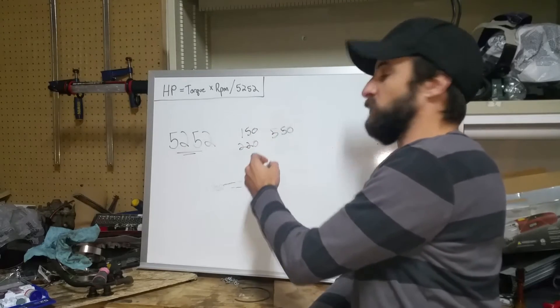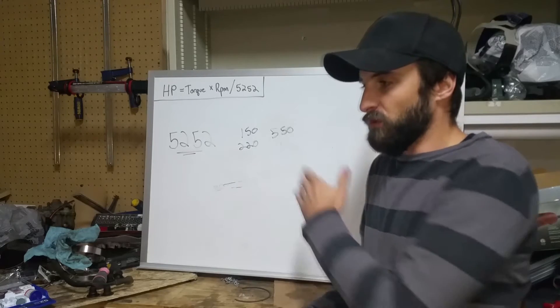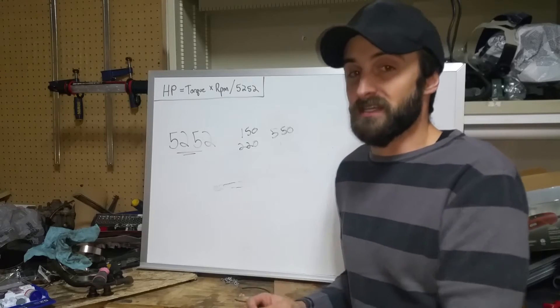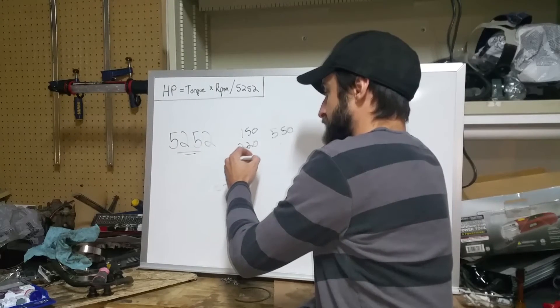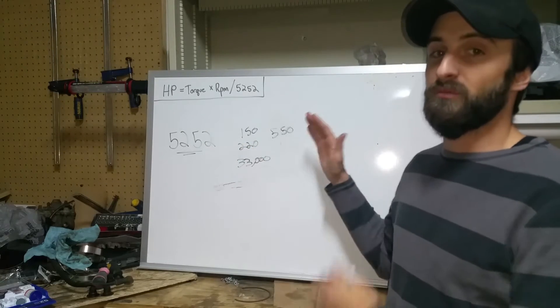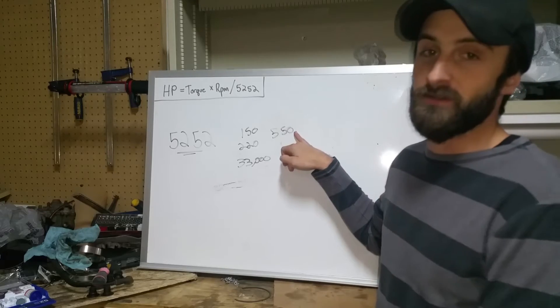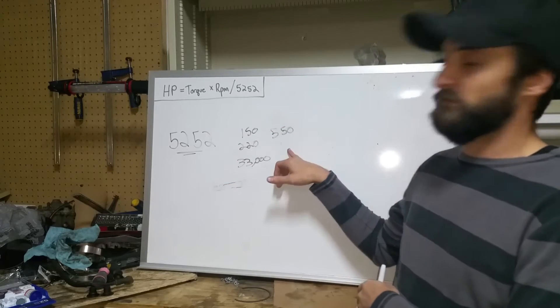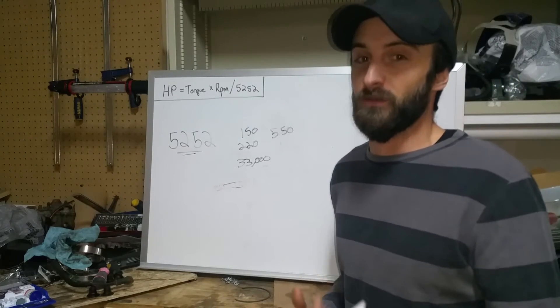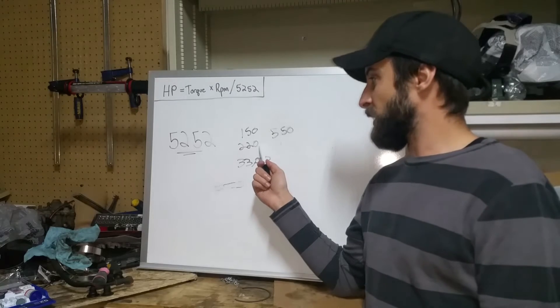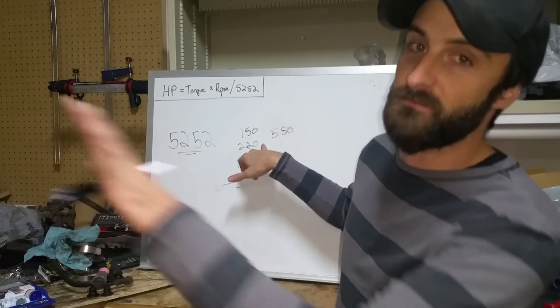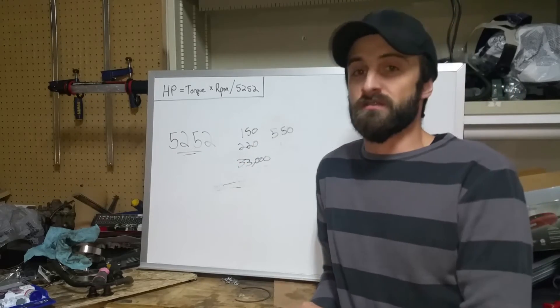So one foot, one second. So if you take both of these, 550 pounds, one foot, one second, multiplied by 60 seconds, you get 33,000 foot pounds. Basically multiplying 550 pounds, one foot, one second, by 60 seconds, you get 33,000 foot pounds. Same as if you take 220 multiplied by 150, 150 pounds multiplied by 220 feet in that same minute, you get 33,000 foot pounds.